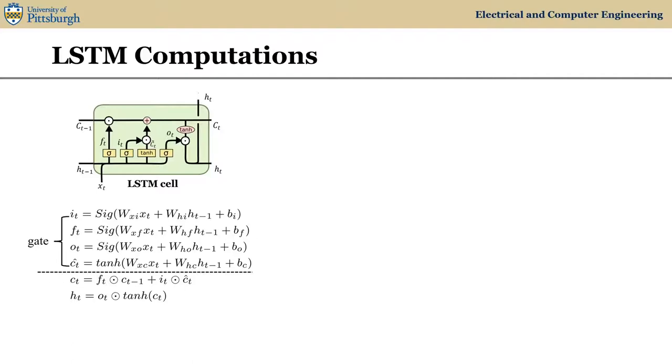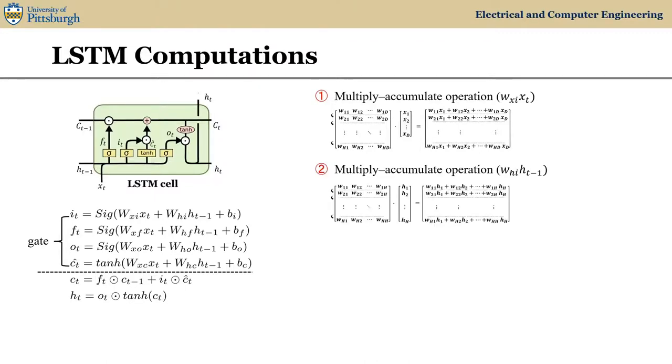We can see that the four gates have the same kind of computations. In a cell, we can summarize five computing patterns. They are the first one, multiply accumulate for input vector in length D, which is the data embedding size. Pattern two, multiply accumulate for prior output in length H, which is the cell size. Both patterns one and two share the same number of matrix rows.